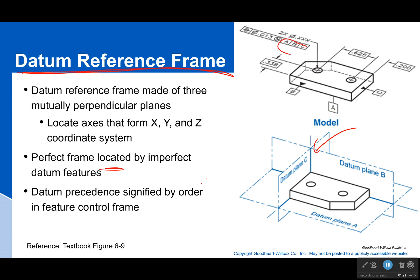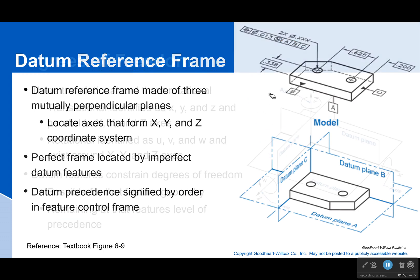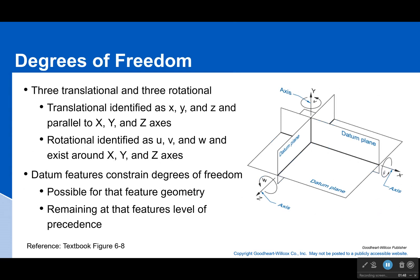Now, some of those datums are more important than others, or they control more than others. And what they control is based on their order in the feature control frame. As we're going to learn later, B, A, C would be completely different than C, A, B, which would be different than A, B, C if I'm talking about my datums and the order I'm putting them in. All of those would give slightly different control and there's reasons you would want to do all of them.